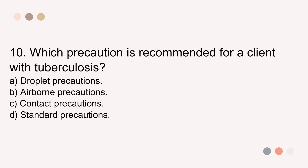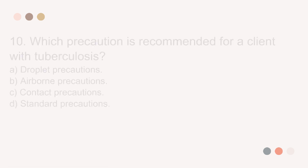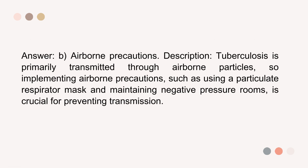Question 10. Which precaution is recommended for a client with tuberculosis? A. Droplet precautions. B. Airborne precautions. C. Contact precautions. D. Standard precautions. The answer is B. Airborne precautions. Description: Tuberculosis is primarily transmitted through airborne particles, so implementing airborne precautions, such as using a particulate respirator mask and maintaining negative pressure rooms, is crucial for preventing transmission.